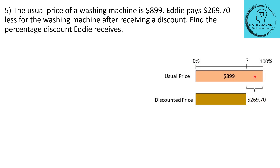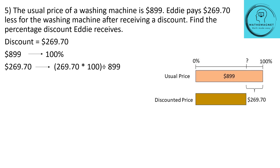The question here is to find the percentage discount, not the discounted price. So $899 is 100%, and $269.70 will be 269.70 × 100 ÷ 899, which is equal to 30%. So the percentage discount that Eddie received is 30%.